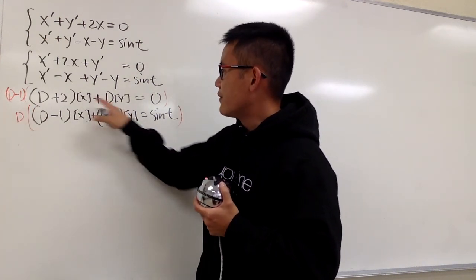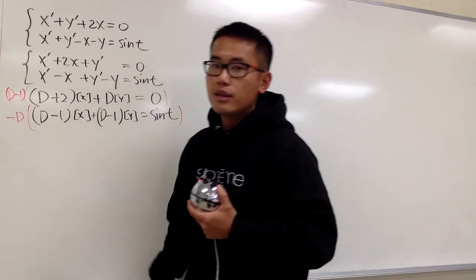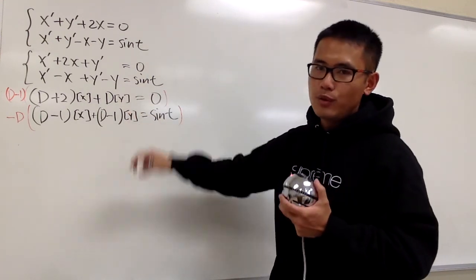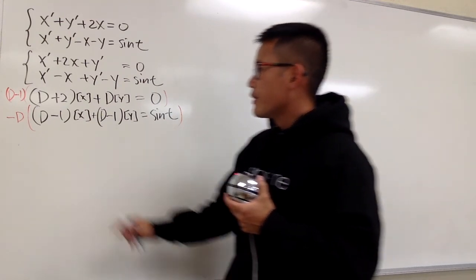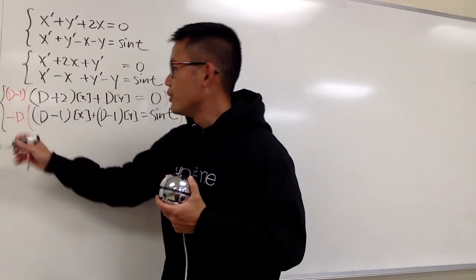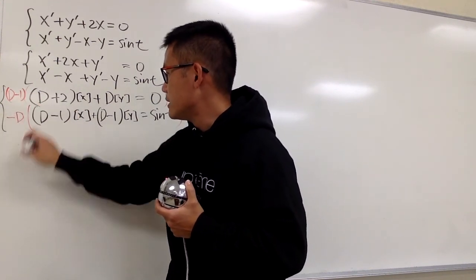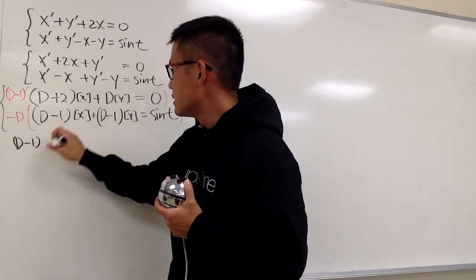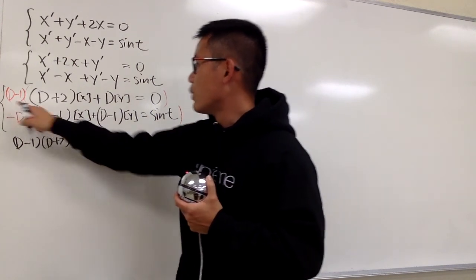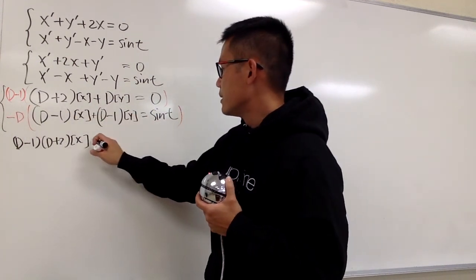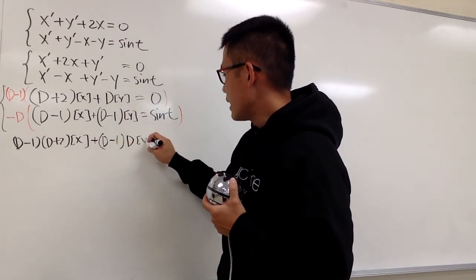However, I don't want to just have D minus 1, D, and D minus 1. I'm going to make the second equation negative, so that when I add them up together, one's positive and the other one's negative and they will cancel each other out. So let me just show you: these two equations are related. Let me write it down — D minus 1 times D plus 2, and this is still with x. And then D minus 1 and D — plus D minus 1 times D with y.